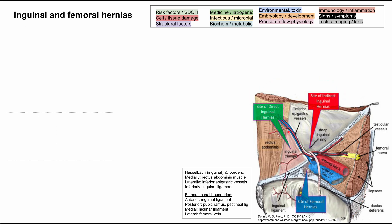You can see the inguinal triangle, also known as Hesselbach's triangle, is indicated by this shape and color here, as well as the femoral canal, which is shown right here. These are the three hernias that we'll be discussing: the direct inguinal hernia that passes through Hesselbach's triangle, the indirect inguinal hernia that passes outside of Hesselbach's triangle, and the femoral hernia, which passes through the femoral canal.